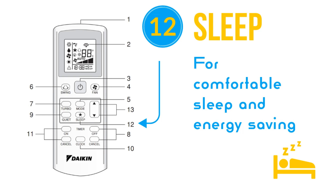Under cooling mode, the set temperature is increased by 0.5 degrees Celsius after the first half hour, another 0.5 degrees Celsius after the second half hour, and 1 degree Celsius after the following 1 hour. Under heat mode, the set temperature is decreased by 1 degree Celsius after the first half hour, another 1 degree Celsius after the second half hour, and 1 degree Celsius after the following 1 hour.